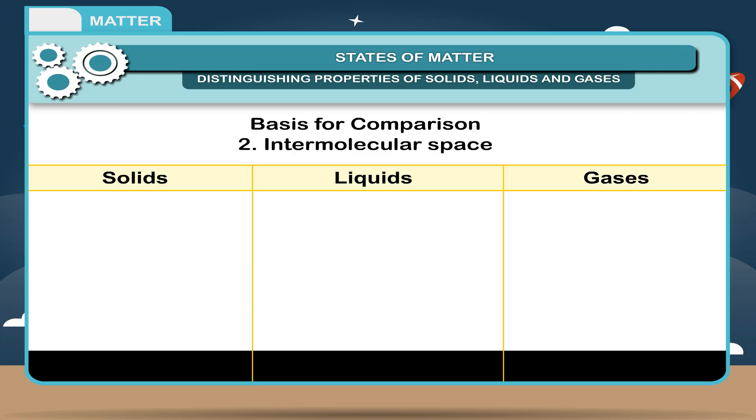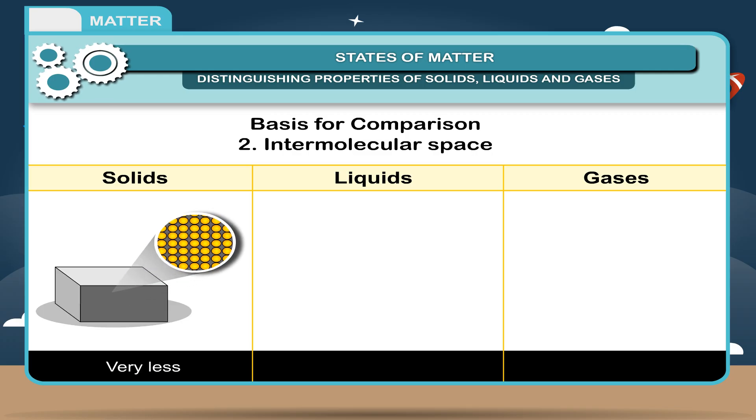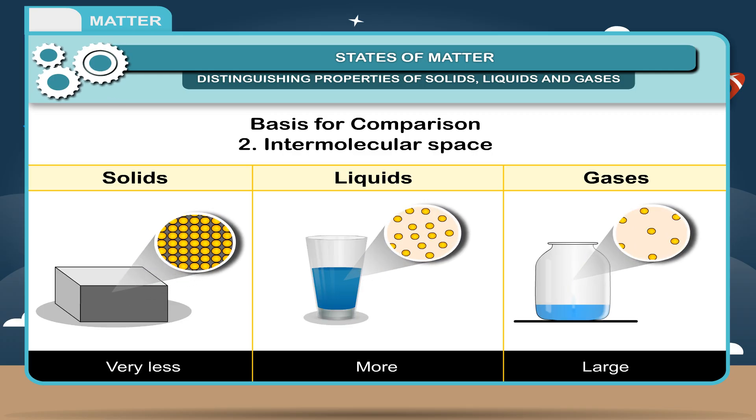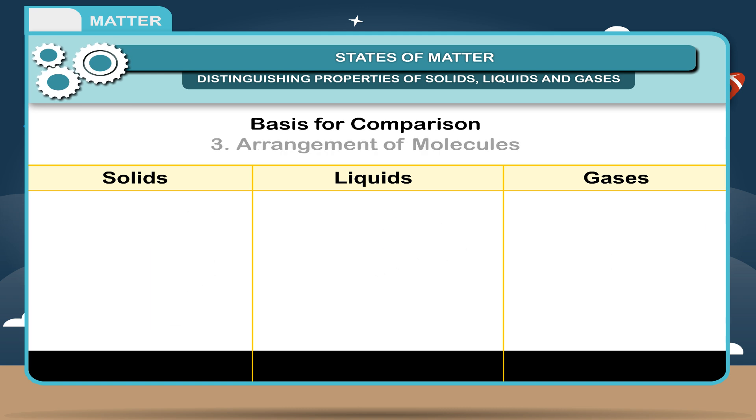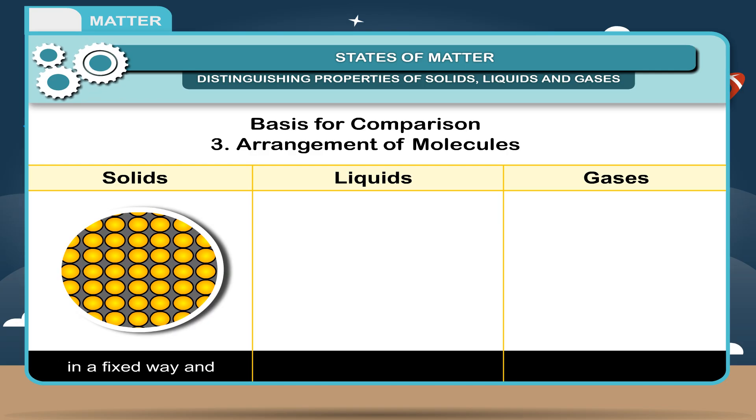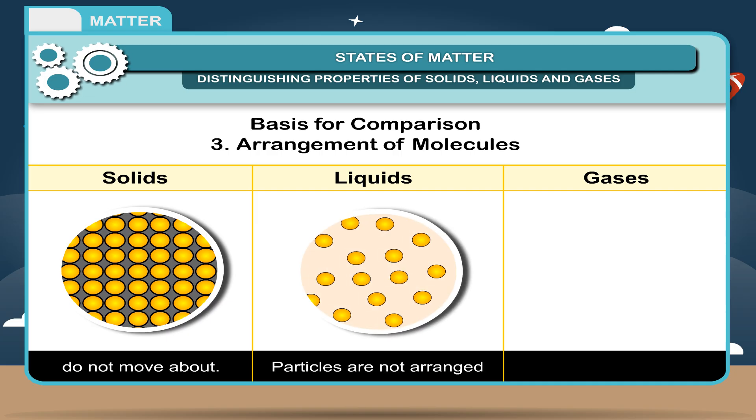2. Intermolecular space: Very less for solids, more for liquids, large for gases. 3. Arrangement of molecules: In solids, particles are arranged in a fixed way and do not move around. In liquids, particles are not arranged in a fixed way.